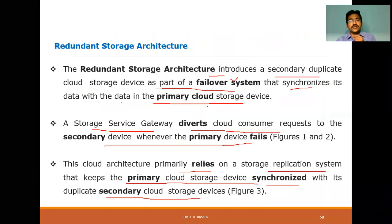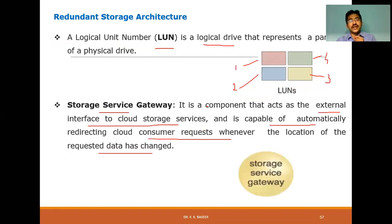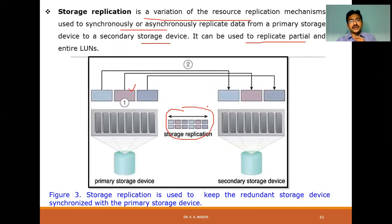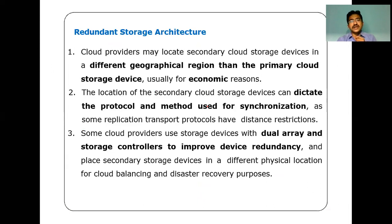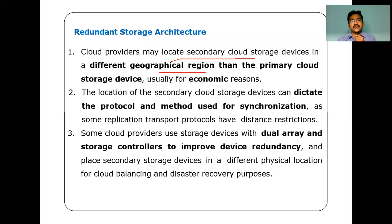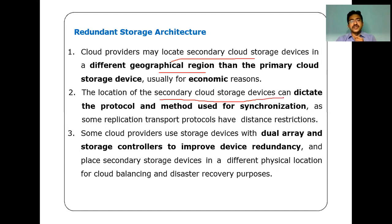The main objective of Redundant Storage Architecture is to introduce a secondary duplicate cloud storage device whenever the primary cloud storage fails. This is achieved using LUNs and the Storage Service Gateway. Regarding general mechanisms in RSA: cloud providers may locate secondary storage devices in different geographical regions than the primary for economic reasons.